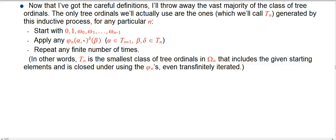So let's get down to the specific tree ordinals that we really need to create fast-growing and slow-growing functions that eventually show that they collapse together. Instead of omega_n, each class is going to be called T_n.